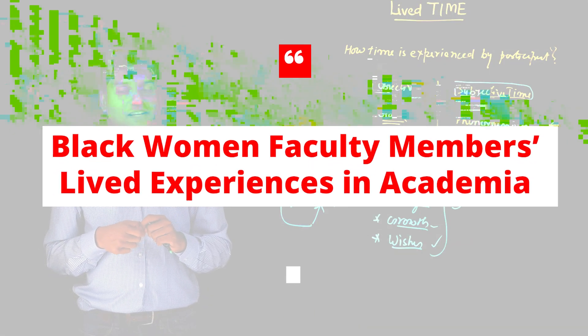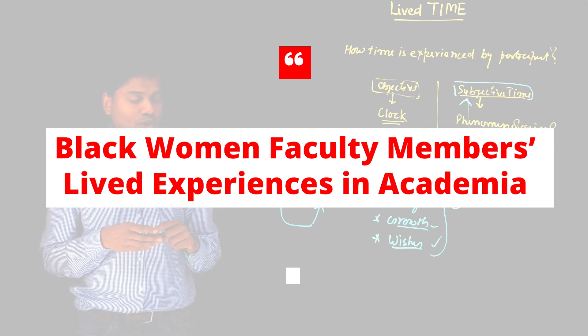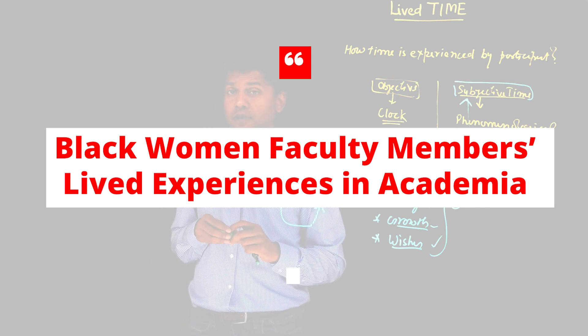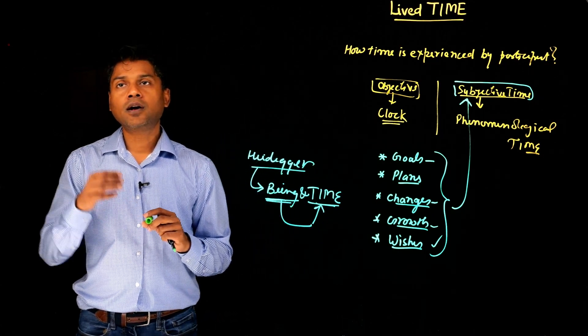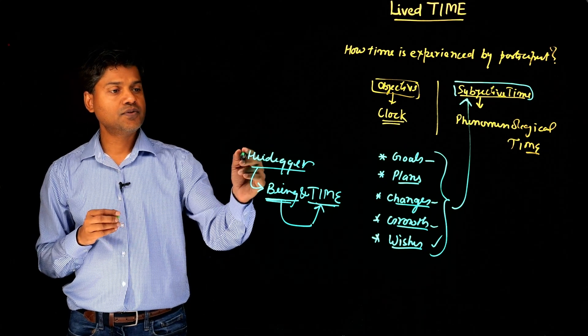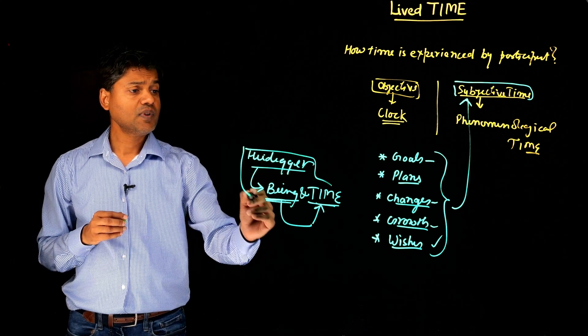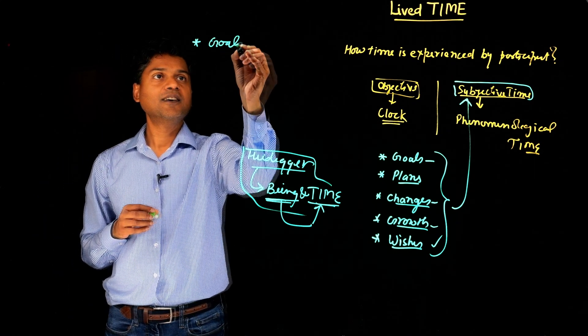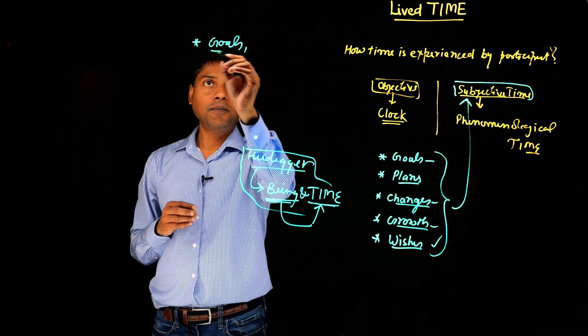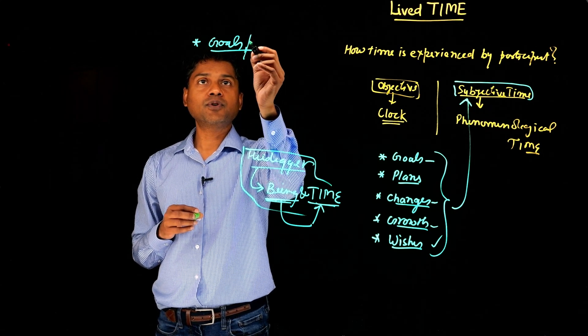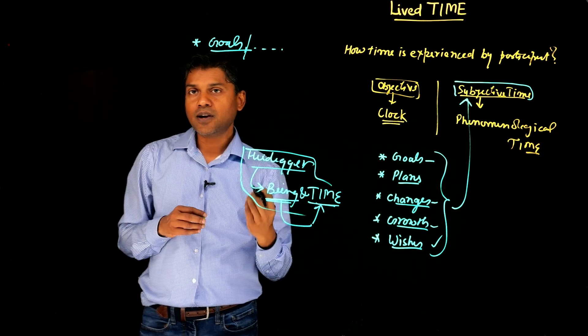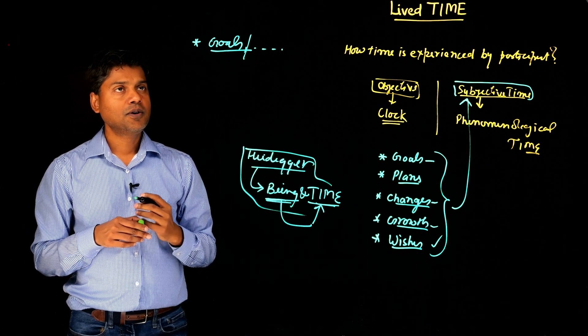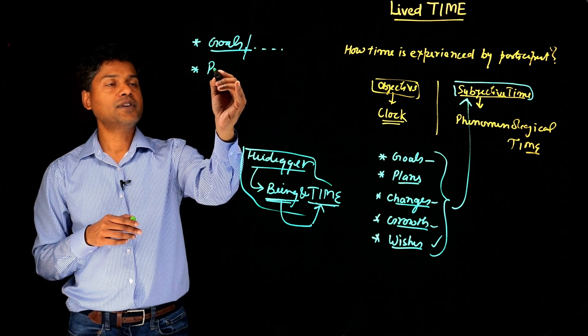Now let's take the same example we have been using to explore: Black women's lived experiences in academia. When you are collecting data from these faculty members, they might talk about the experience of time in the sense of their goals, what they want to achieve, the experience of time in terms of what they want to do in the next couple of years. They are talking about time.